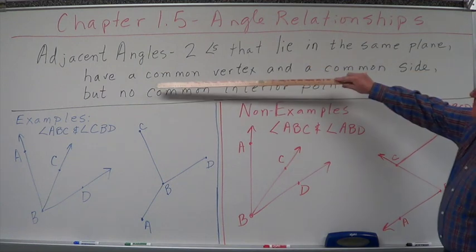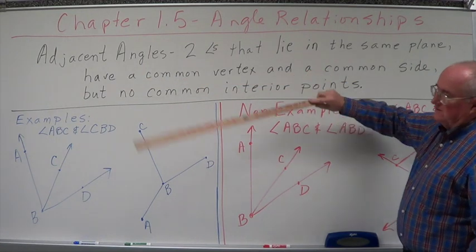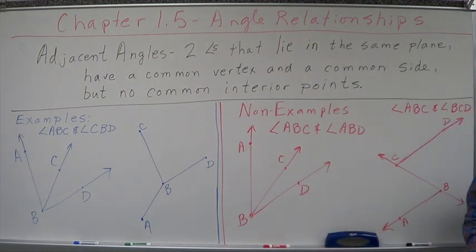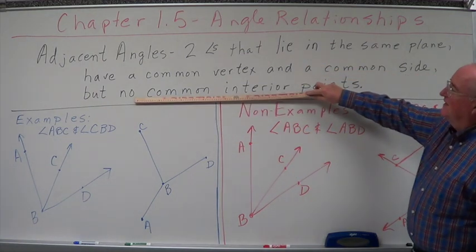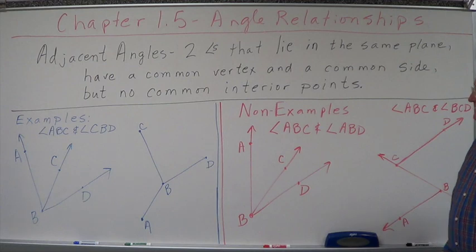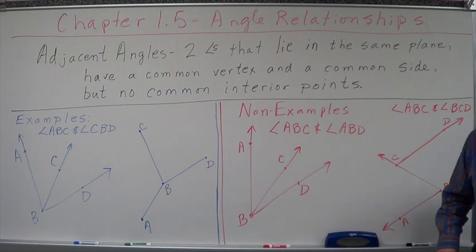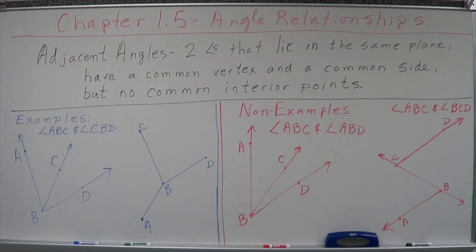So therefore, they do not meet this, a common vertex. Have to have a common vertex. Have to have a common side. Cannot have interior pieces that are common to both of them. Adjacent angles. Very important to know that. Adjacent angles, they have to be drawn together. Side by side. Think of your adjacent neighbor. You share a fence.